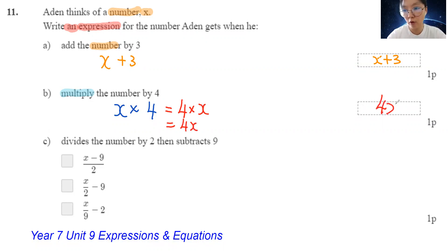So here I type 4X. C. Divide. Immediately, you write down the operation for divide. Divide the number by 2. Keyword here. Then, subtract 9. So subtract 9. Very straightforward.